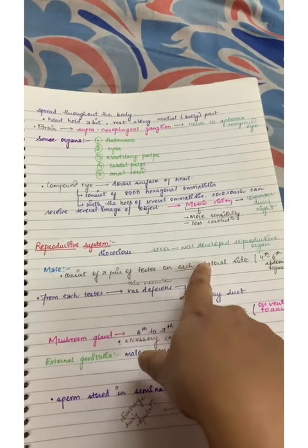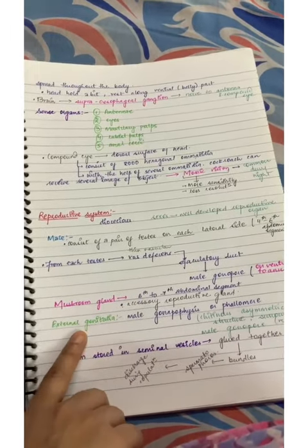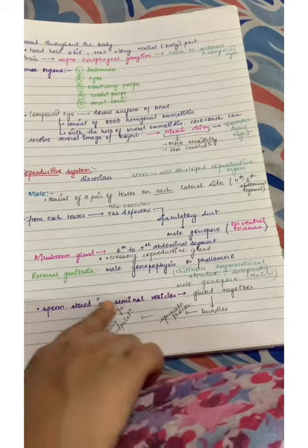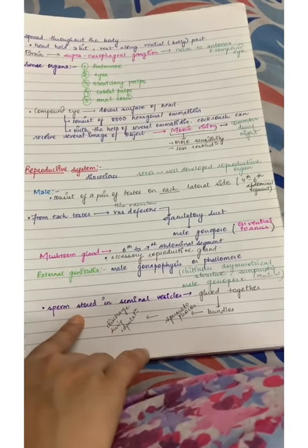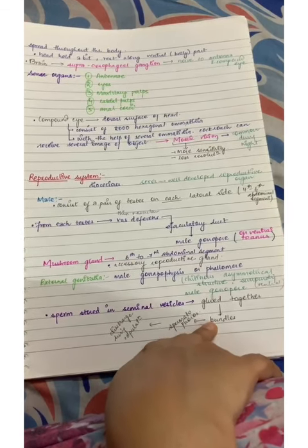Now learn about mushroom gland. It is important to learn about external genitalia. Learn about sperm stored in seminal vesicles, glued together in bundles. What is the difference in sperm that is released? What happens in spermatophore which discharges during copulation.